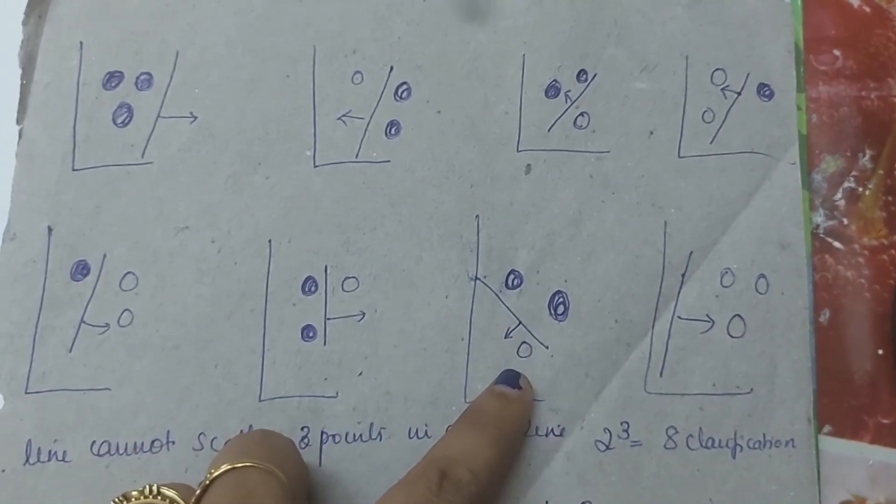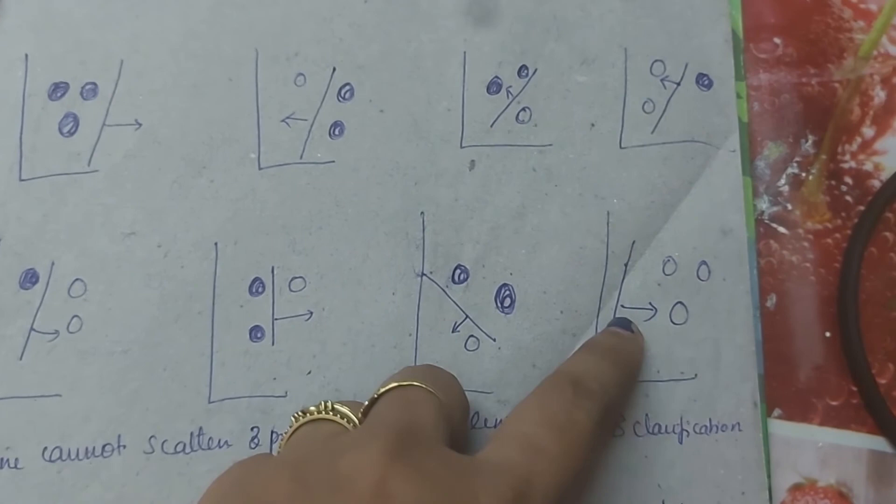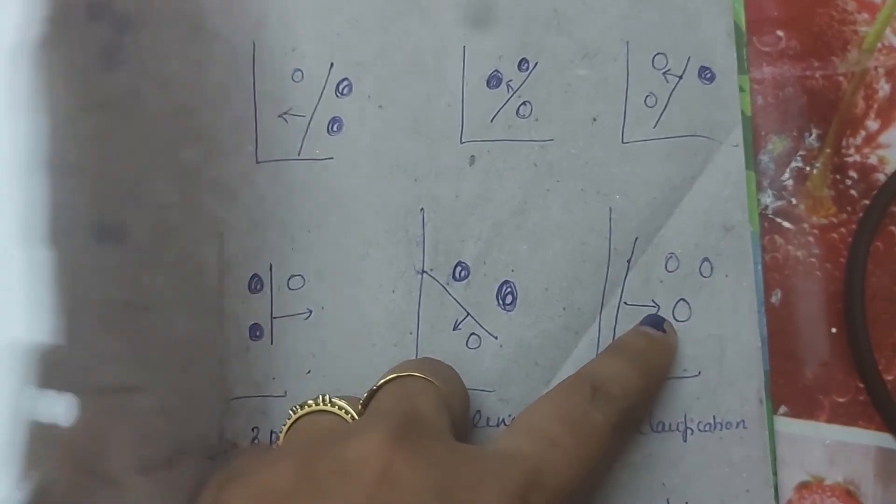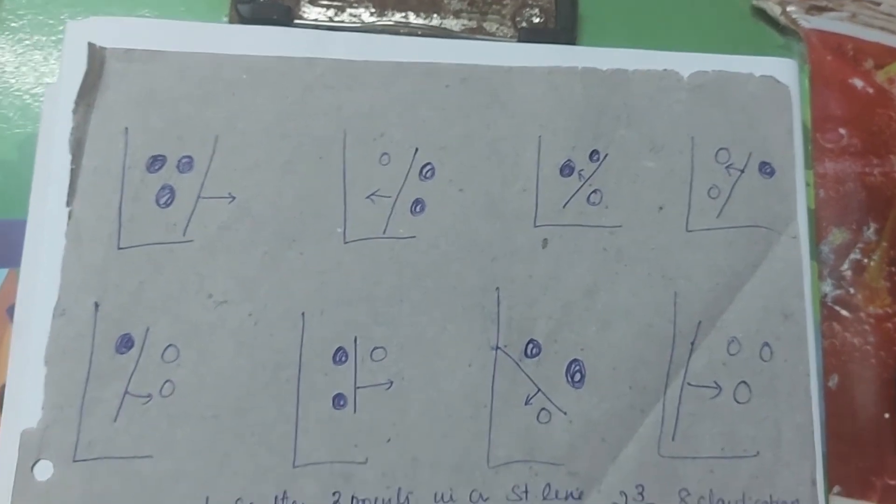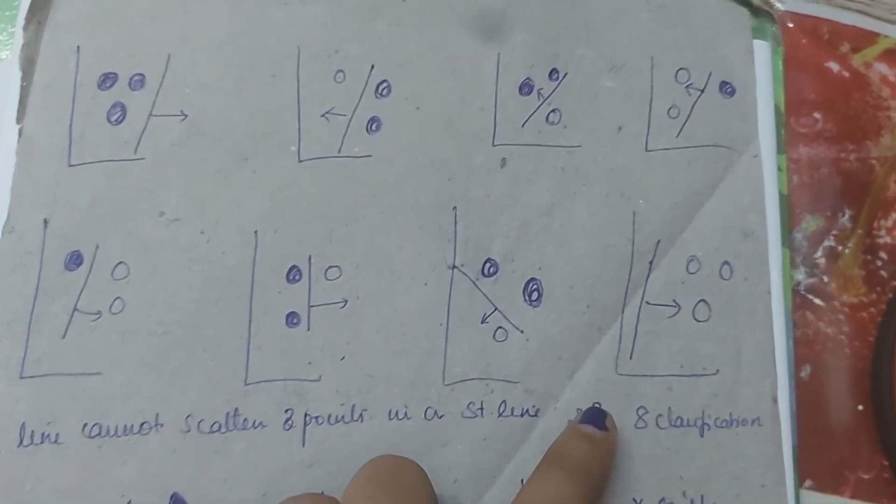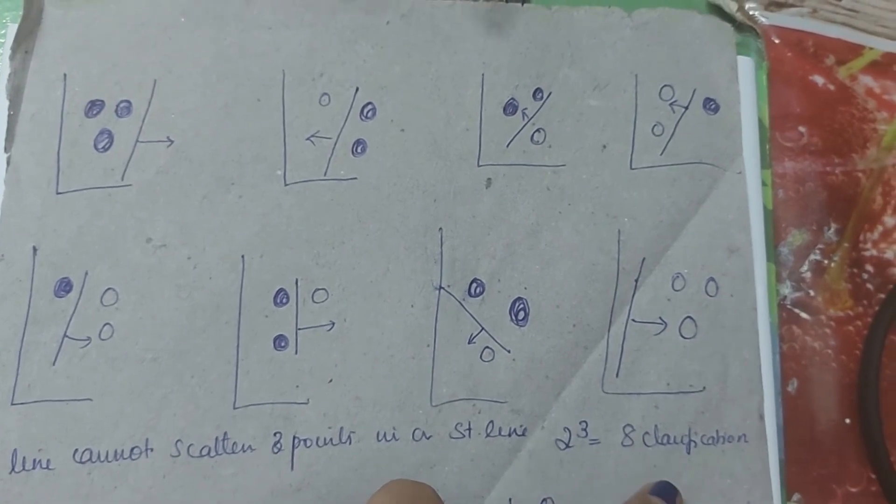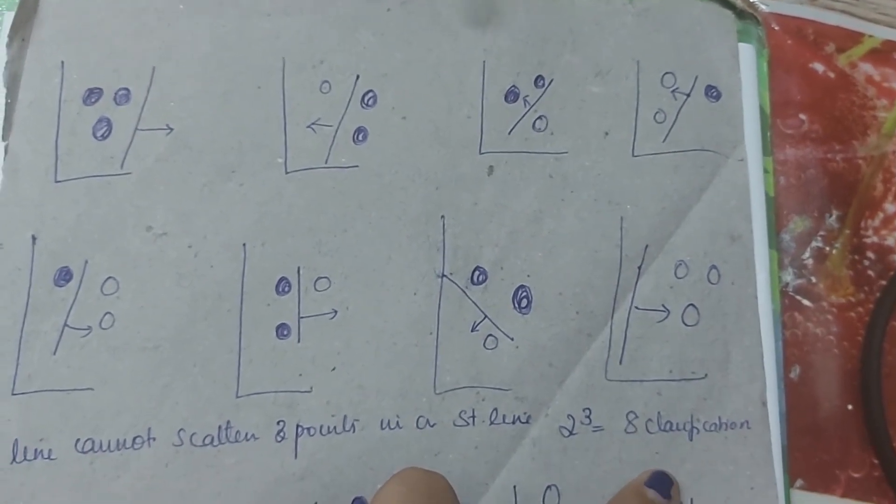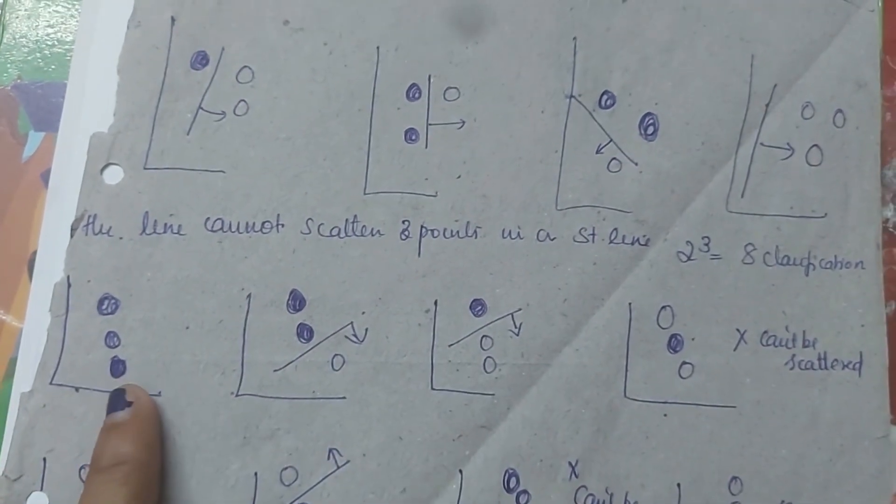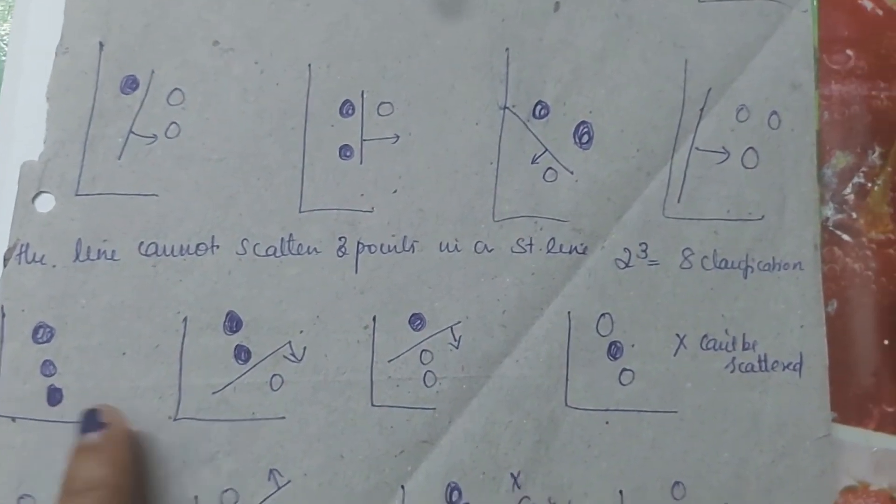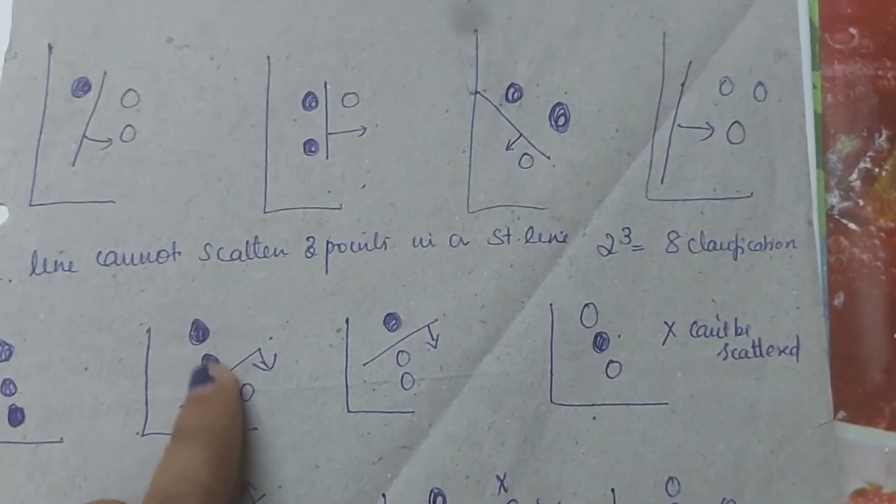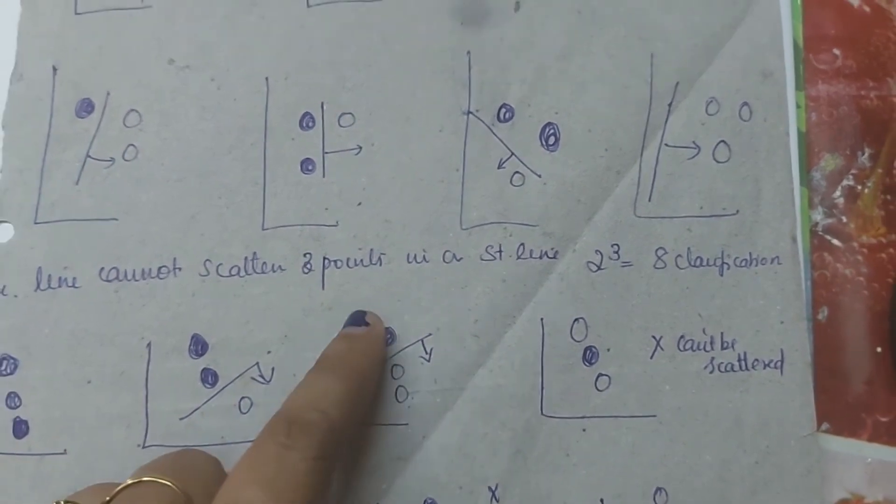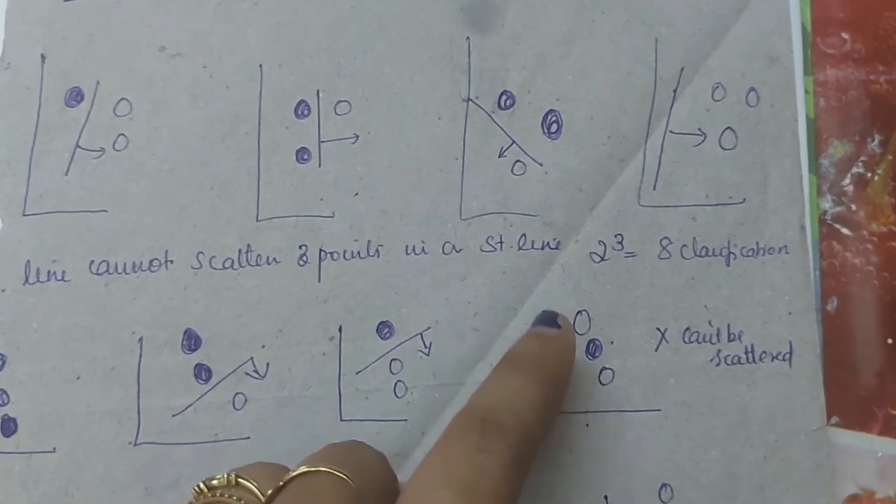One is positive, one is negative, another positive, and then three are one positive condition. Now this is all possible, we have to get a shatter. We have to get a formula 2 raised to 3 is equal to 8 classifications.